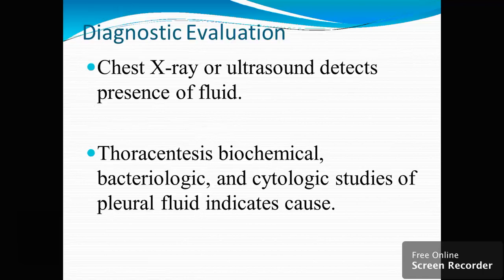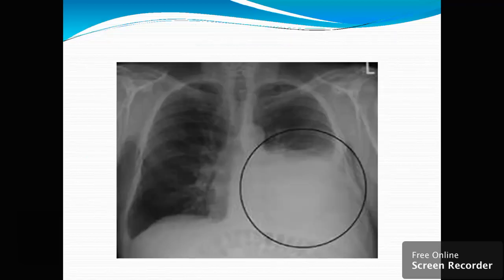Diagnostic evaluation: chest X-ray or ultrasound detects the presence of fluid. Thoracentesis with biochemical, bacteriological, and cytological studies, along with blood tests, is performed. In the chest X-ray, you will see a cloudy area — in the left lung, the upper lobe is clear while the lower lobe is filled with fluid. When assessing the patient's chest with a stethoscope, breath sounds will be reduced, and the patient's oxygen saturation will be decreased.